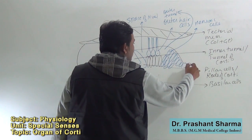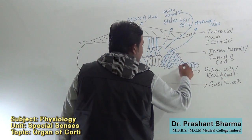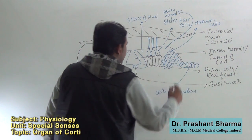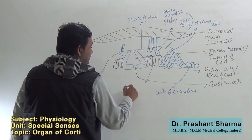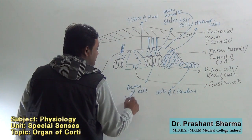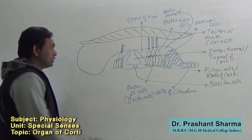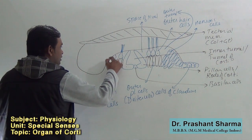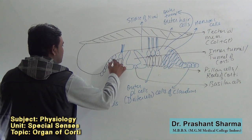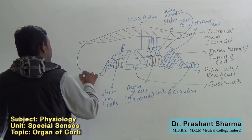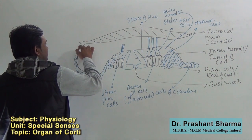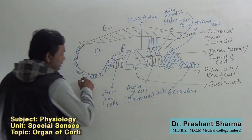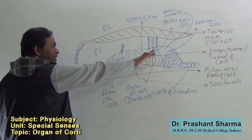Outer to the outer phalangeal cells, a few cells of Claudius may be found, which are cuboidal-like cells. The inner phalangeal and outer phalangeal cells are also known as Deiters cells. Inner phalangeal cells are present here along with border cells. This is endolymph, and the basilar membrane is what all these types of cells rest upon.